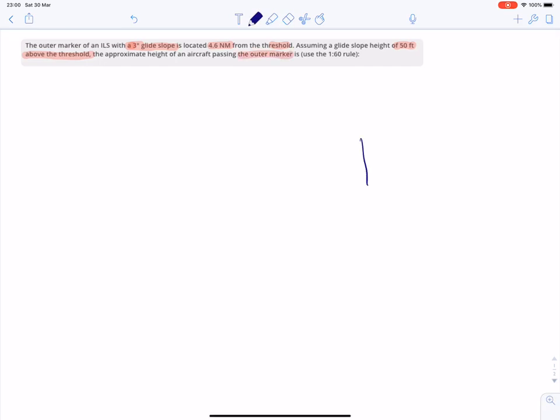So the question is what is the height of the aircraft when passing the automarker? That will be here, let's say the automarker will be here. And according to this we are supposed to be 50 feet above the threshold.